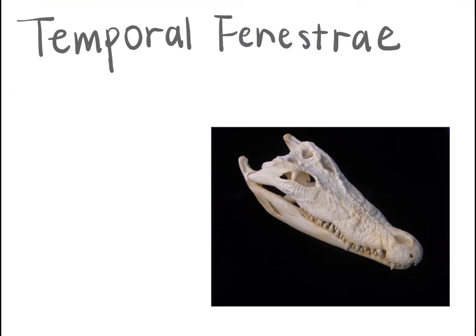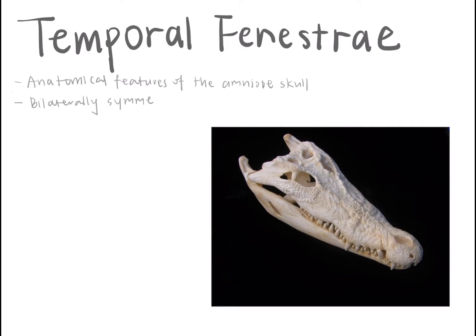The temporal fenestra is an anatomical feature of the amniotic skull characterized by bilaterally symmetrical holes in the temporal bone. Depending on the lineage of a given animal, two, one, or no pairs of temporal fenestrae may be present.